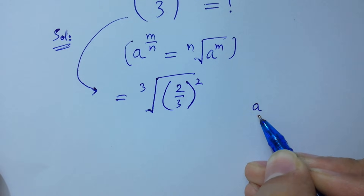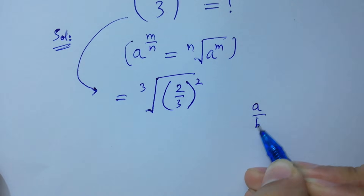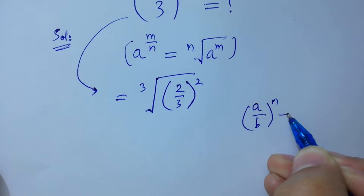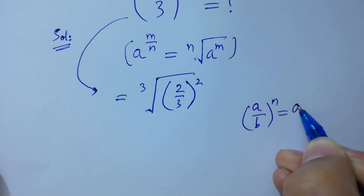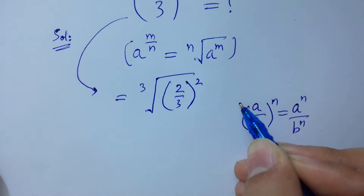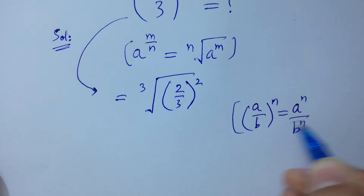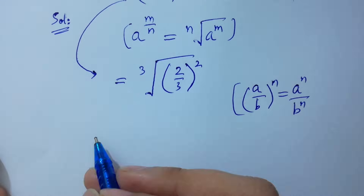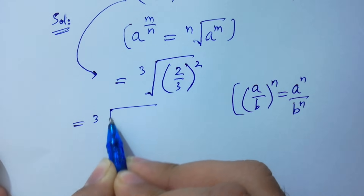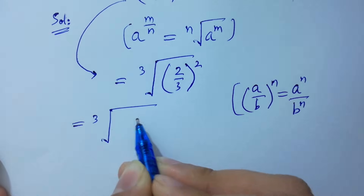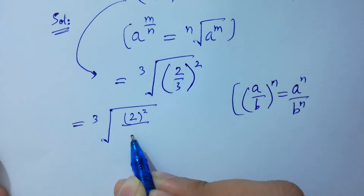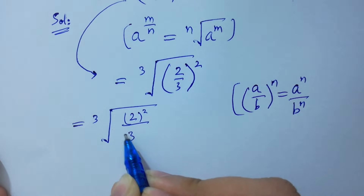Since (a over b) to the power n equals a to the power n over b to the power n, so it will be cube root of (2 squared over 3 squared).